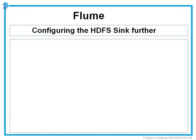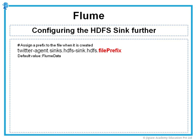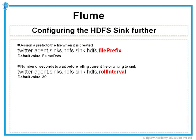Let us take a look at some of those properties. In case you want to assign a prefix to the file created in HDFS, you can use the file prefix property — the default is 'flume data', which we already saw when we listed the contents of our HDFS directory. In case you want to write events based on a time interval, you set the 'hdfs.rollInterval' property — the value is in seconds. If you do not want to roll the file based on a time interval, set it to zero. By default the value is 30 seconds, so every 30 seconds the contents of the HDFS sink will be rolled over to a file on HDFS.